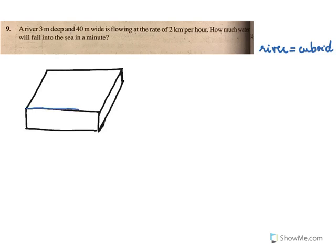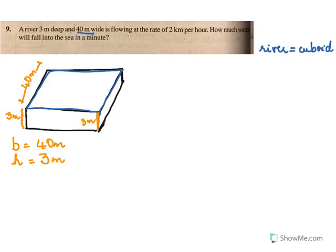We have drawn a cuboid here which represents the river. The width of the river is 40 meters, and the depth of the river is 3 meters. So we have the breadth as 40 meters and the height, or depth, of this cuboid is 3 meters.